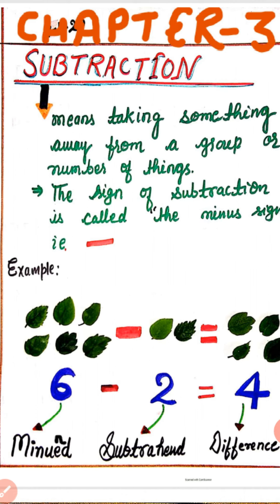For example, here we have 6 leaves. We take 2 leaves from the group of 6 leaves. After taking 2 leaves, now we see how many leaves will be left.